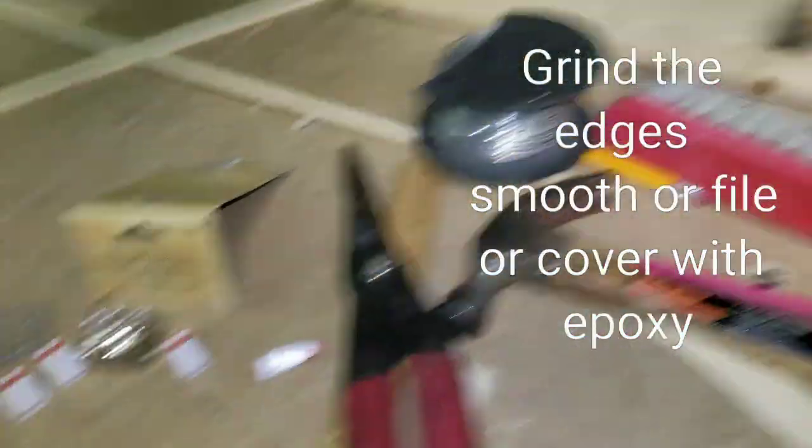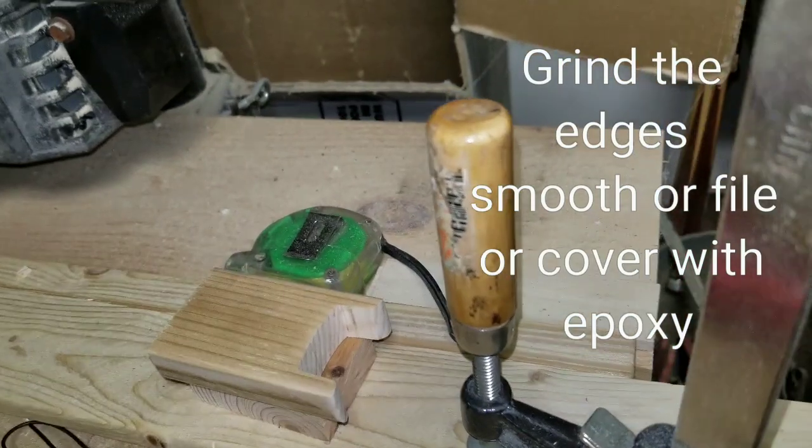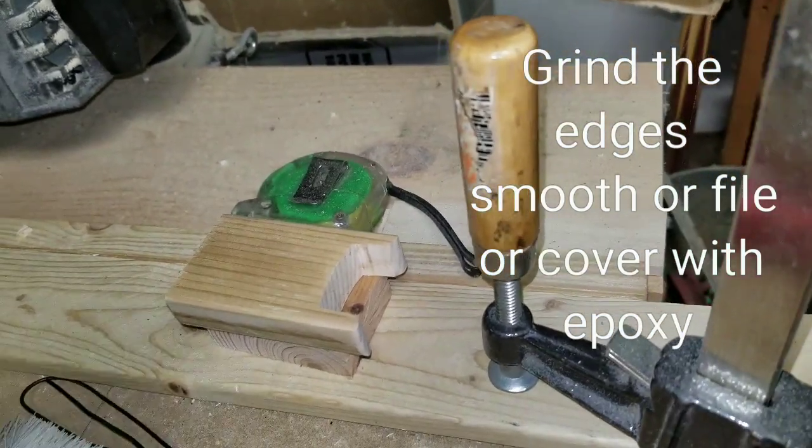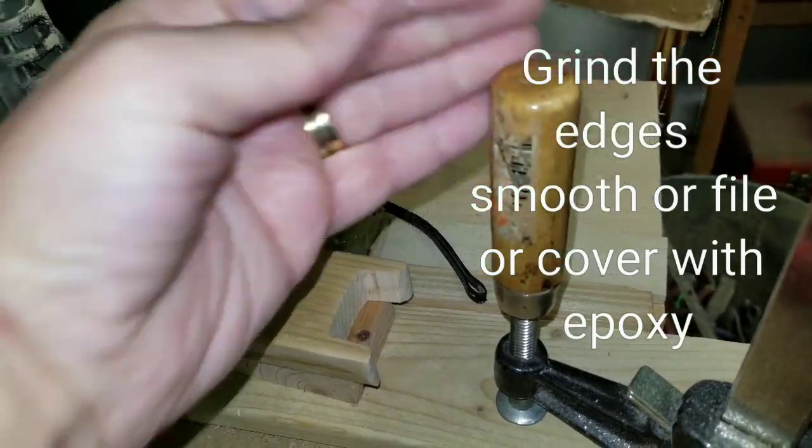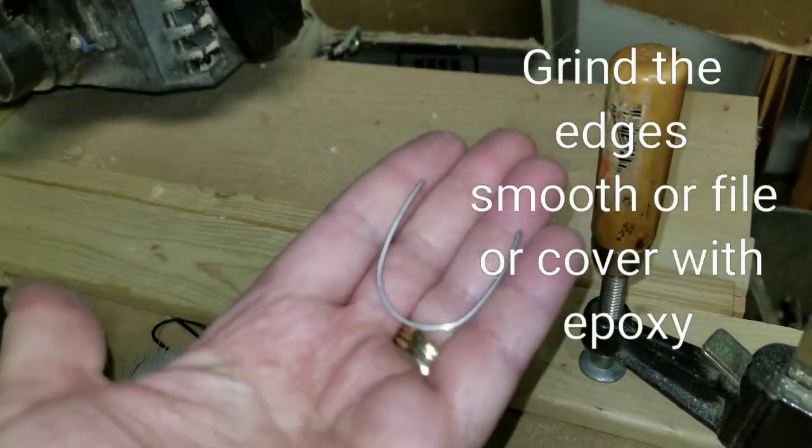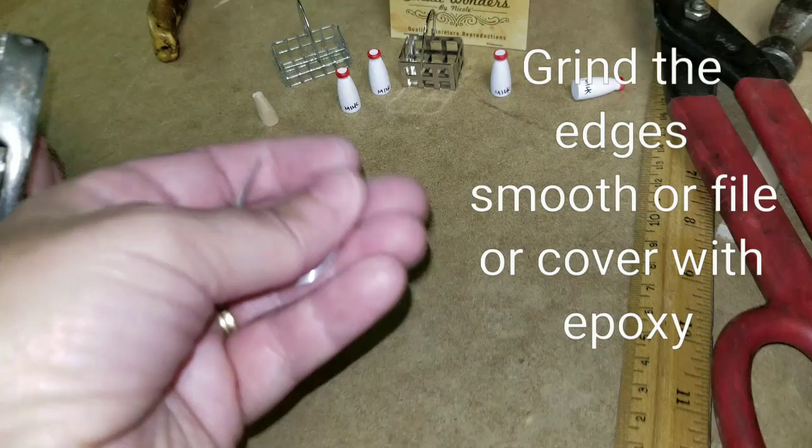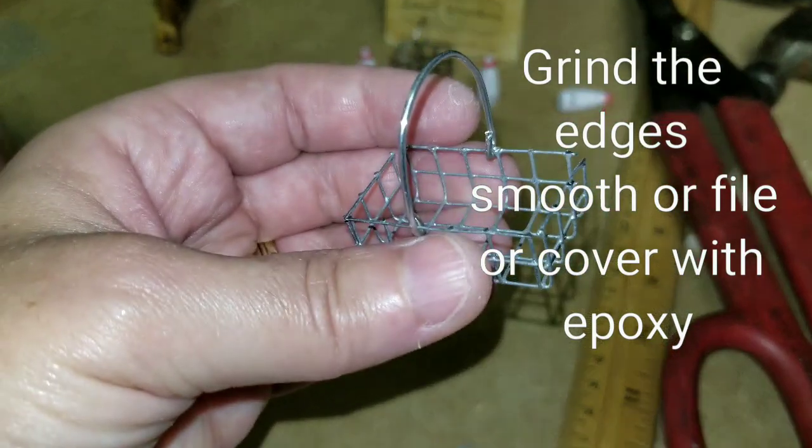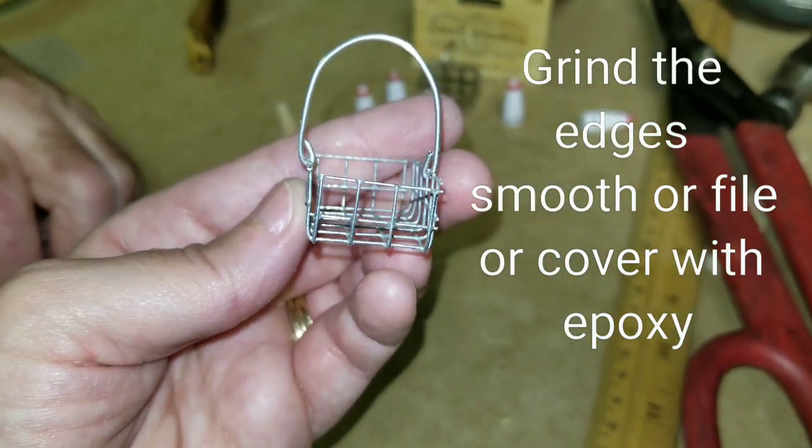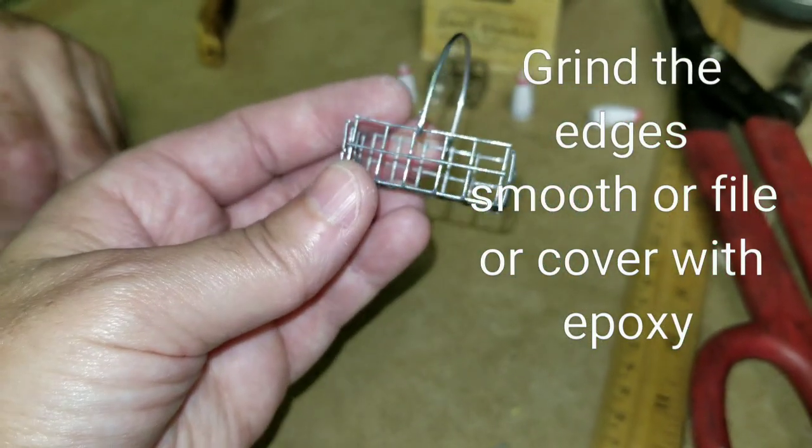Alright, the next thing you want to do is you want to get something that's round. I'm just using this little clamp here. And you want to bend a piece of wire around that to get that shape that looks like a U. Alright, once you have the U shape, then we need to create the handles that's going to be locked down in there.